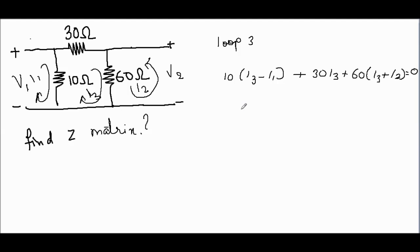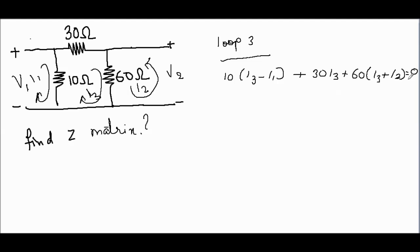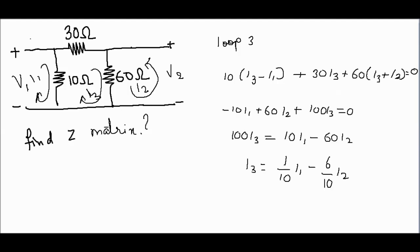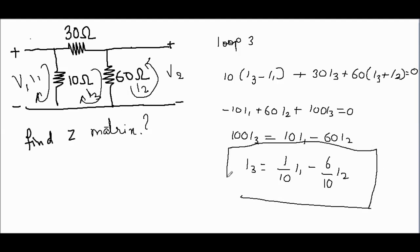Applying KVL at loop 3, we get: 10(I3 minus I1) plus 30·I3 plus 60(I3 plus I2) equals 0. By solving this, we find the equation for I3. After solving for I3, we substitute its value into V1 and V2.